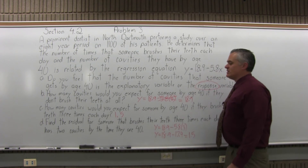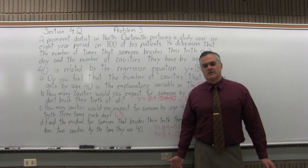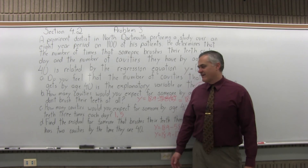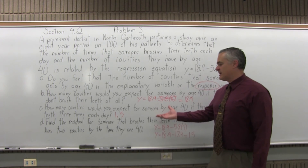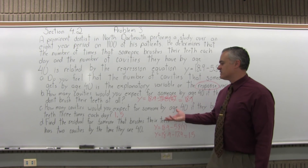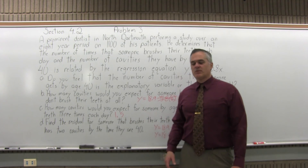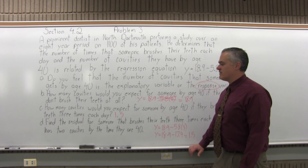One and a half cavities — no individual person would have exactly one and a half cavities, but if you had many people brushing their teeth three times per day, the average would come out to 1.5.